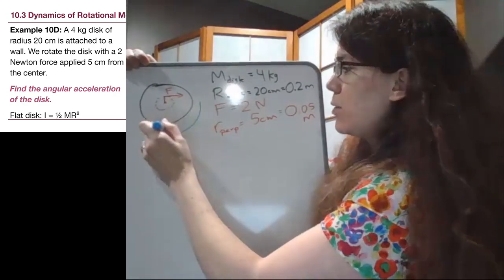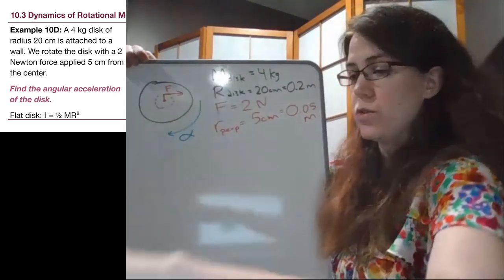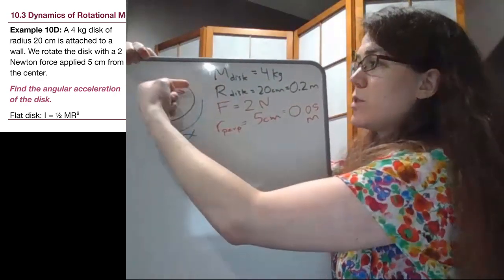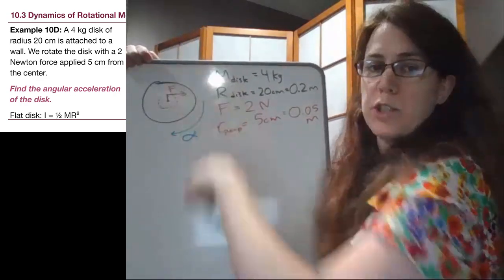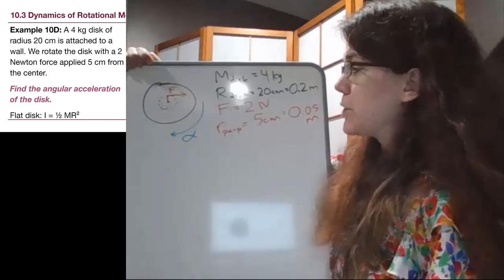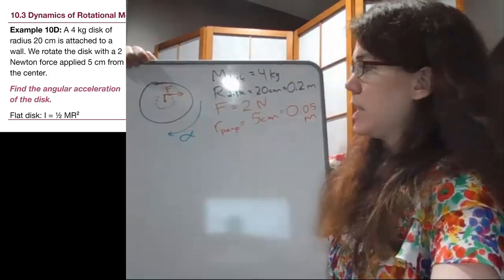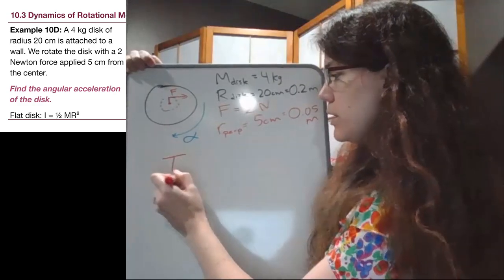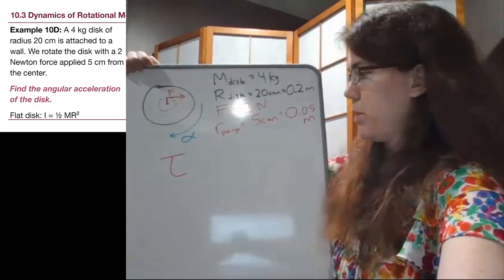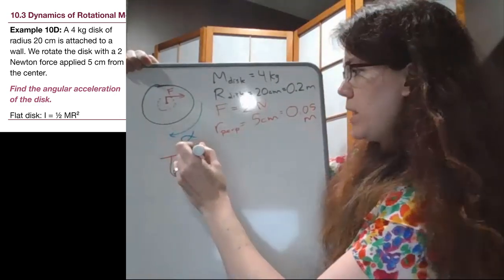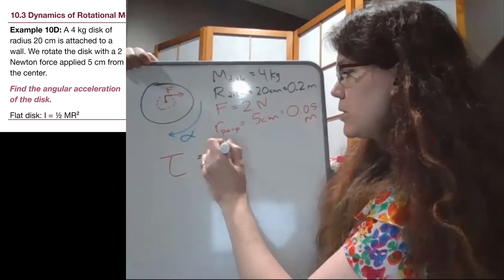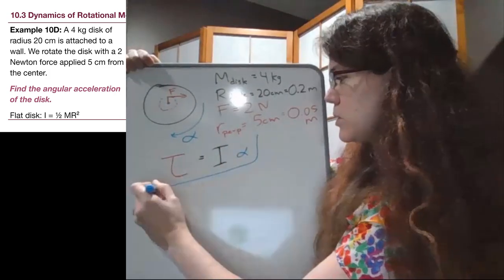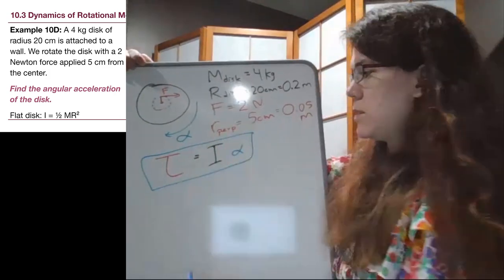So our goal is to find how this thing is able to rotate if we are basically pushing it this direction and causing rotation. So our goal is to find the angular acceleration of the disc. And so we have this equation, and I'm now going to use a couple of different colors to write it out. Torque equals I times alpha. That way we can more easily see the different pieces that go into this.